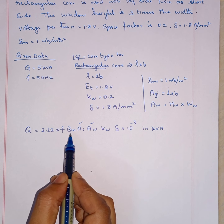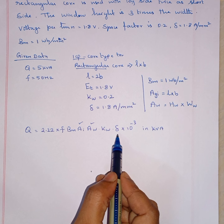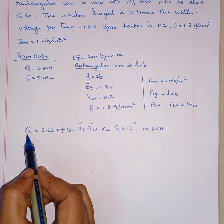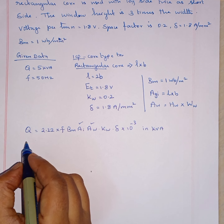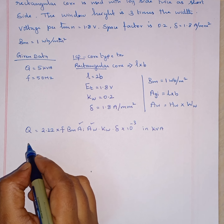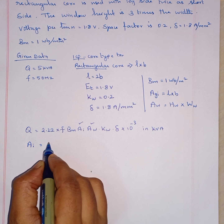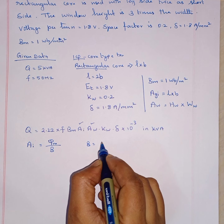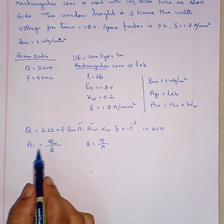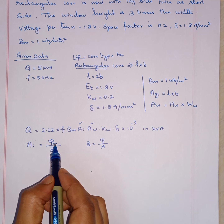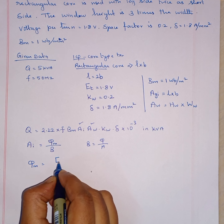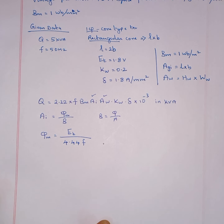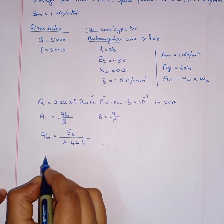In this equation, we know F — it is given — BM is given, KW is given, delta is given, everything is given. Only two unknowns are there. First we have to find out one unknown, then we can find AW. Another formula: AI is equal to phi M divided by BM. This is from flux density — flux density is flux per area. The phi M is found from the ET equation: phi M is equal to ET divided by 4.44 F. ET is given in the problem so it is easy to find out. Then AGI is equal to AI divided by KI. KI is not given, so we take it as 0.9.